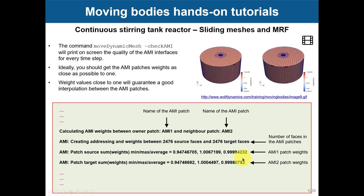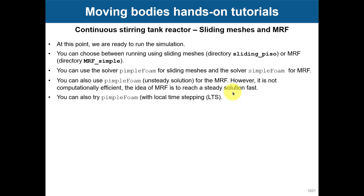If the coefficients deviate significantly from one — say 0.9 or 1.1 — that is telling you there is a problem in the interpolation. You can still run, but you may be introducing numerical errors. We are going to run with pimpleFoam for sliding meshes and simpleFoam for MRF. Remember that MRF uses a steady solver, which makes sense because the goal of MRF is to reach a steady state. You can also use local time stepping as discussed previously.